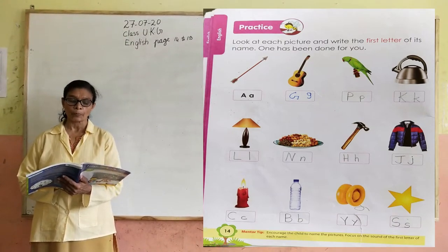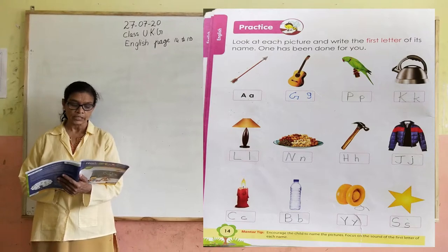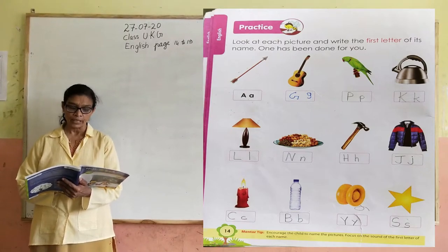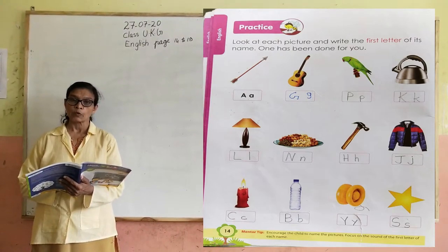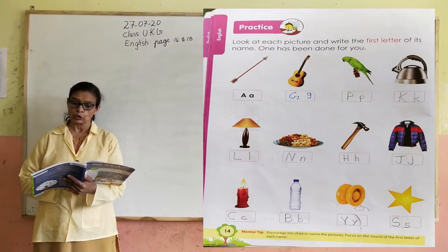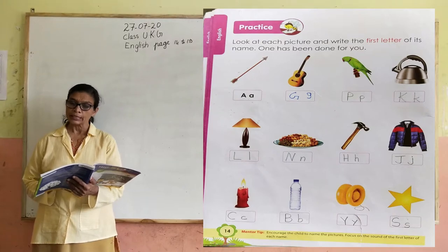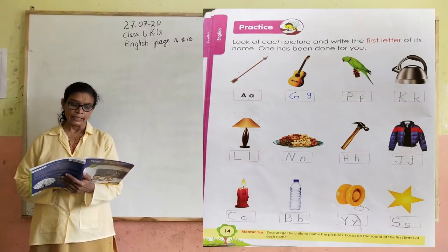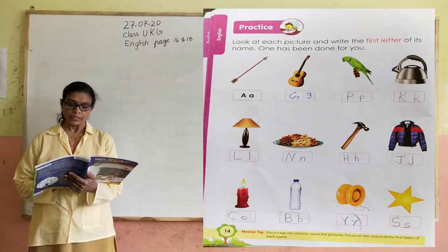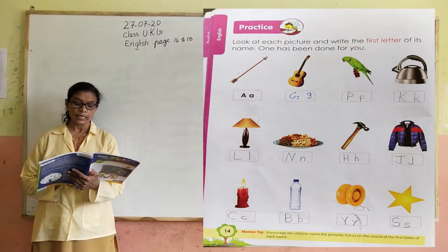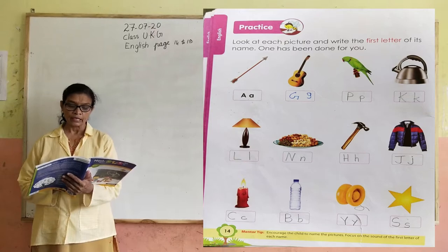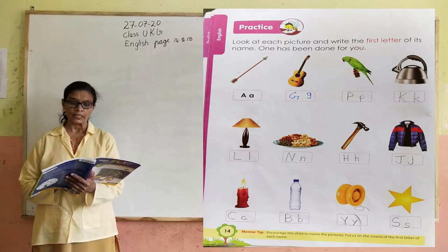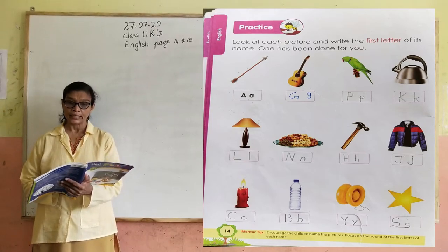You write down in this column capital G under small g. Next picture is Parrot. First letter of Parrot is P. Capital and small letter. Next picture is Kettle. First letter of Kettle is K.